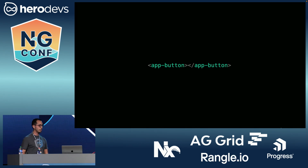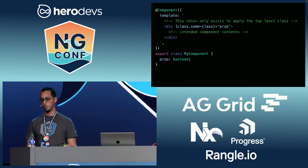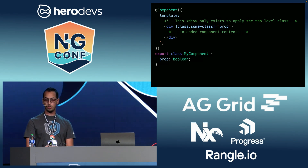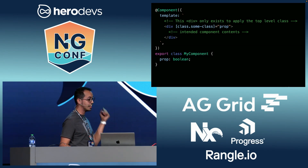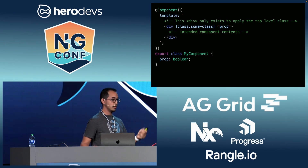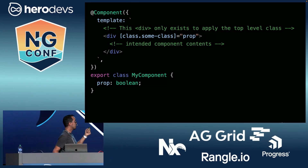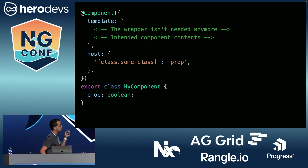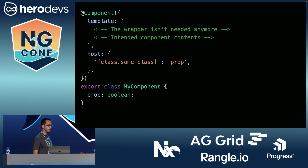So let's talk about the host element. First up are attribute bindings. A pretty common scenario is to wrap the whole contents of a component in a div just because you need to add a class or toggle a class on it, add some styles to apply to the whole component — and that's the sole purpose of that div. The alternative is the host property of the component. We move the same binding to the host property, the logic works the same way — you have a class bound to a property applied dynamically, and you don't need that wrapper div anymore.